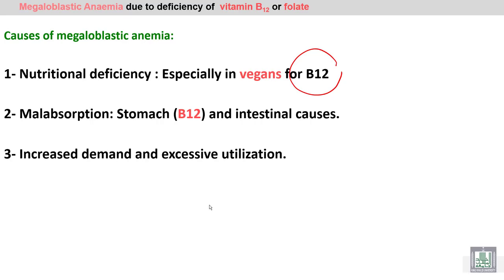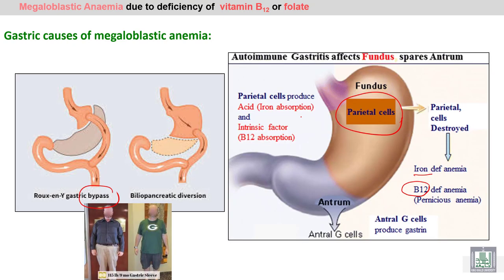We will discuss the causes of megaloblastic anemia. Vitamin B12 deficiency occurs in vegetarian or vegan peoples, as vitamin B12 is present in animal food. Other causes include malabsorption of B12 or folic acid due to gastric or intestinal causes, increased demand, and excessive utilization.